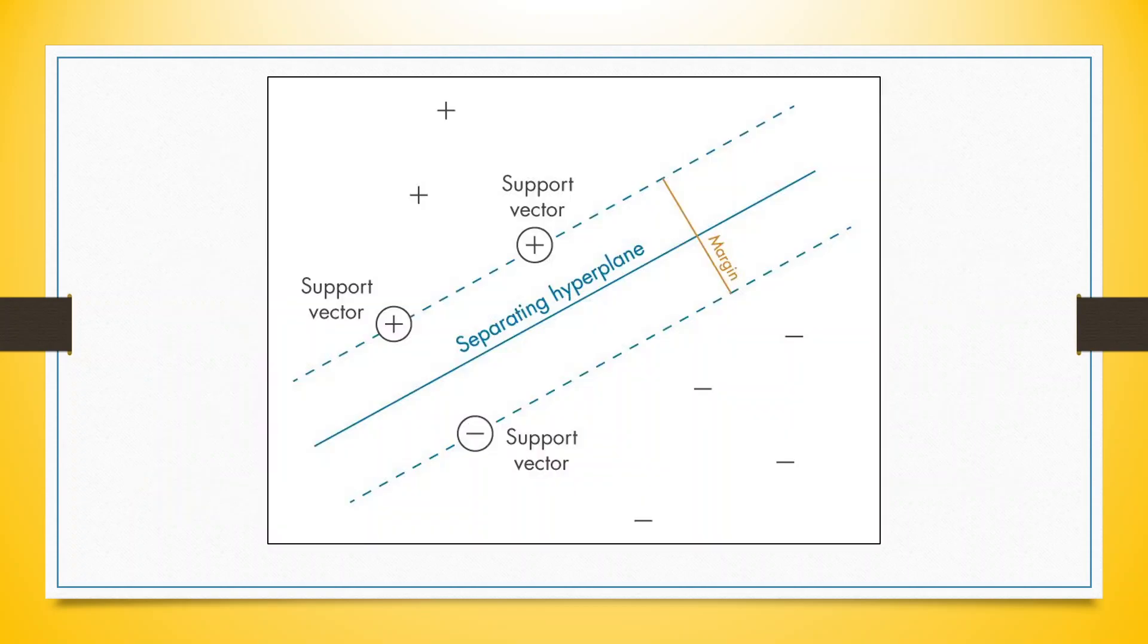In this diagram you can see that there are two classes plus and minus. We want to separate them with the help of the hyperplane. So we will identify all those plus and minuses and we will try to draw a hyperplane on the basis of this plus and minus which are closest to each other. But we want to maximize the distance between them.